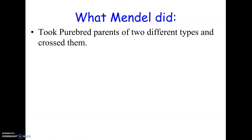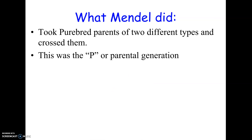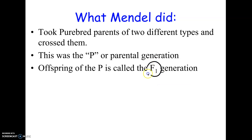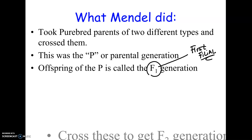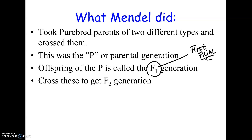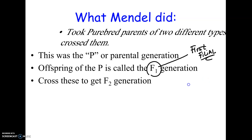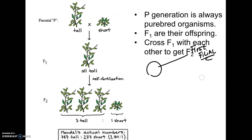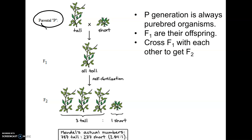What Mendel specifically did was always take purebred parents. He didn't know they were genetically purebred, but plants in one area of the garden always made tall plants — their offspring were always tall — while plants in another area were always short. He called these purebreds because they always made offspring like themselves, and he called this the P generation, which stands for parental. So when he would cross two of these, he would look at their offspring, and this is what starts the diagram.